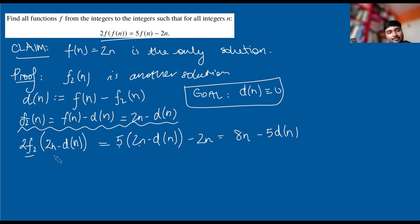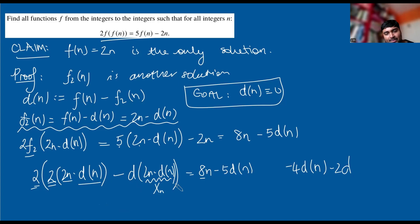The right-hand side, if you expand, 5(2n) gives 10n minus the 2n is 8n, and then minus 5d(n). Let's expand the left-hand side further. We've got another f₂ here, so this is going to be 2f₂(2n - d(n)). Substituting, it's 2(2(2n - d(n)) - d(2n - d(n))). That's getting a bit weird looking, but that's fine. This equals 8n - 5d(n). This simplifies really nicely. We've got 2·2·2n = 8n, that cancels with 8n. Then 2·2·(-d(n)) = -4d(n). Then -2d(x_n), where x_n = 2n - d(n). So -4d(n) - 2d(x_n) = -5d(n). Cleaning this up gives d(n) = 2d(x_n).